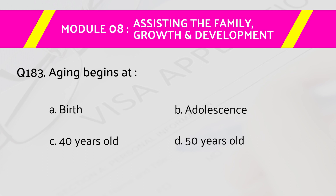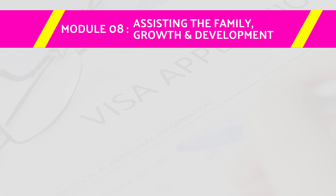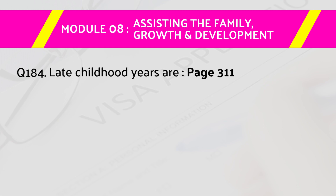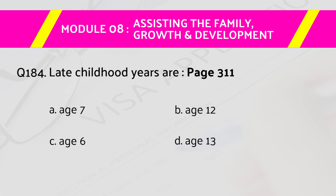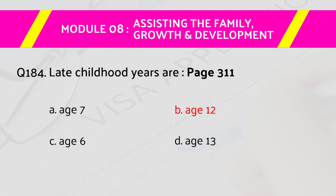Question number 183: Aging begins at — answers are: A) birth, B) adolescence, C) 40 years old, D) 50 years old. The right answer is A, birth. Question number 184: Late childhood years are — page number 311. Answers are: A) age 7, B) age 12, C) age 6, D) age 13. The right answer is B, age 12.